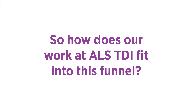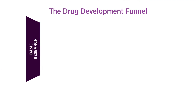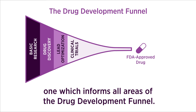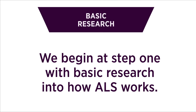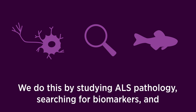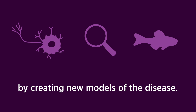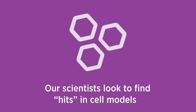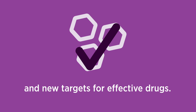So how does our work at ALS TDI fit into this funnel? To quickly find effective treatments for ALS, we apply a comprehensive approach — one which informs all areas of the drug development funnel. We begin at Step 1 with basic research into how ALS works, studying ALS pathology, searching for biomarkers, and creating new models of the disease. Our team then moves on to Step 2, where we begin to test compounds, looking to find hits in cell models and new targets for effective drugs.